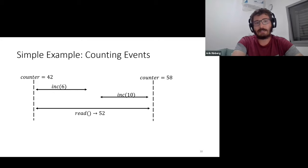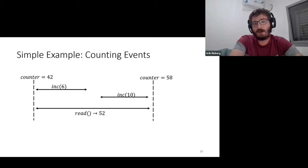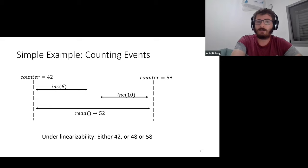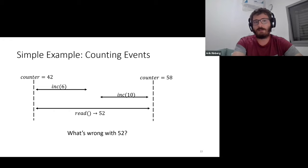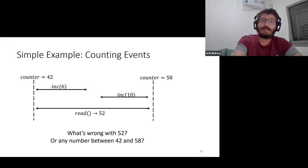Looking at the time series analysis: we have a read concurrent to an increment of 6, followed by an increment of 10. The counter begins at 42 and ends at 58. Is this history linearizable? The read returns 52. Under linearizability, we can return either 42 (before both increments), 48 (in between), or 58 (after). So 52 is not linearizable. But what's wrong with 52? I just wanted to know if I needed to spin up another server. At 58 I would; at 52 I did—same outcome. What's wrong with any number between 42 and 58? That's the intuition behind IVL.